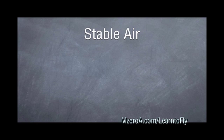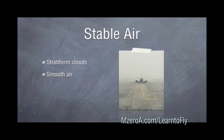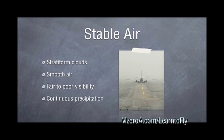Let's talk about the differences between stable and unstable air. Stable air is typically stratiform clouds. It means smooth air, and usually visibility is fair to poor. It also means that we're going to have continuous precipitation.